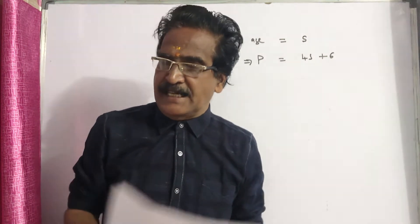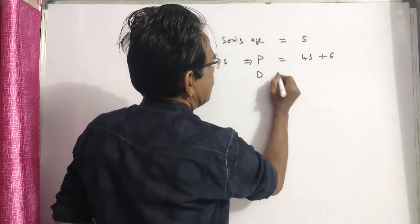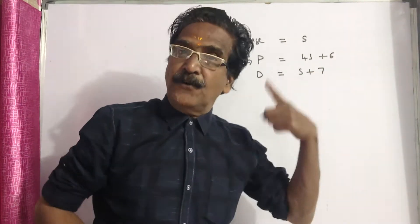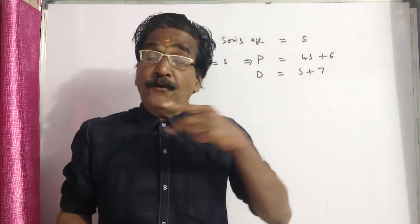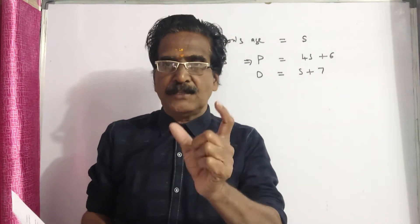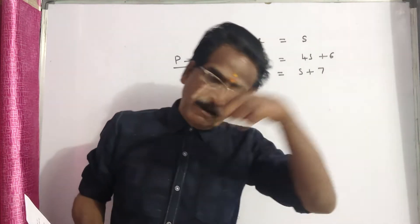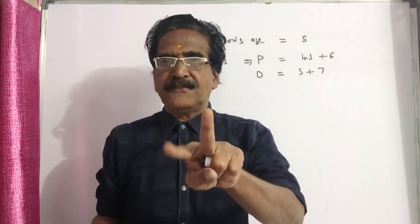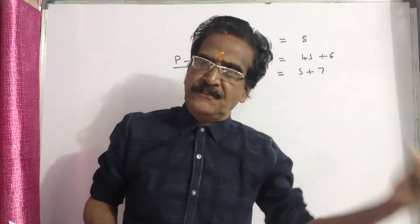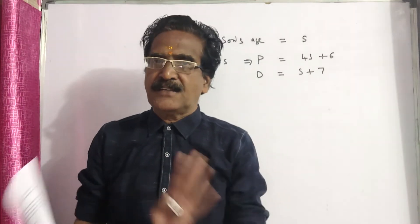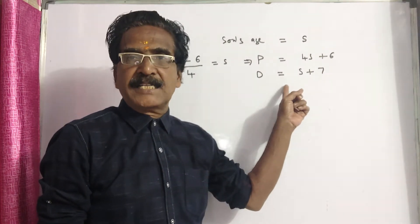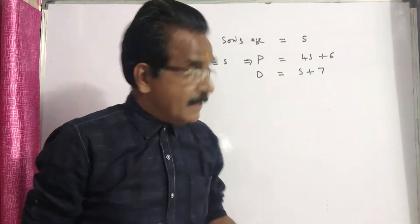His daughter's age is seven years more than his son, so daughter = s plus 7. The problem mentions four years ago, but the difference between two persons' ages is always constant — at any time, the difference is the same. So we need not bother about four years ago. Therefore daughter's age d is equal to s plus 7.